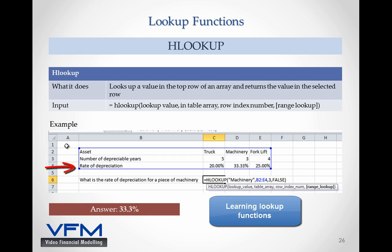We want the rate of depreciation which is in the third row, so we're going to put 3 in there, and then we're going to put in FALSE. All FALSE means is that it's going to give us an exact answer. In this one, the rate of depreciation of the machinery is 33.33%.